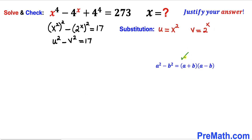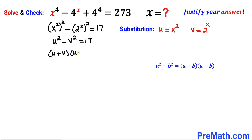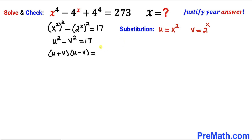Now let's recall the famous difference of two squares identity: a squared minus b squared equals a plus b times a minus b. We are going to apply this identity on the left hand side. So therefore the left hand side could be written as u plus v times u minus v. Now focusing on 17 on the right hand side — 17 is a prime number and can only be broken down as 17 times 1.